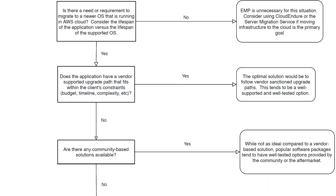The first question to ask is: is there a need or requirement to migrate this application to a newer operating system running in AWS cloud? You need to consider the lifespan of the application and the lifespan of the supported operating system. If there is no such requirement, EMP is not necessary. You can consider solutions like CloudEndure or Server Migration Service to migrate the application as-is through virtual machine replication.